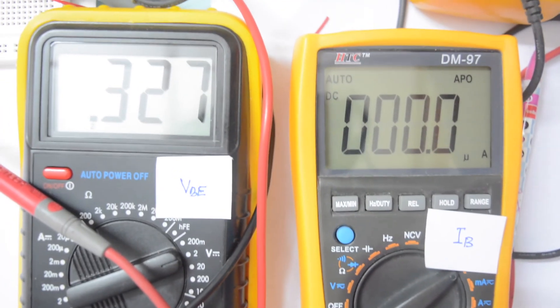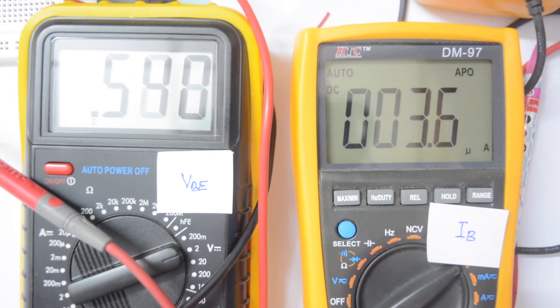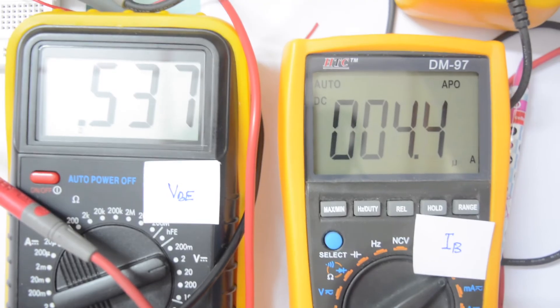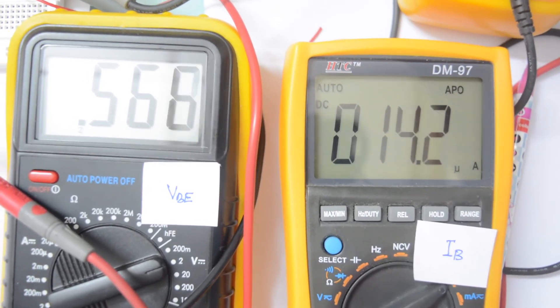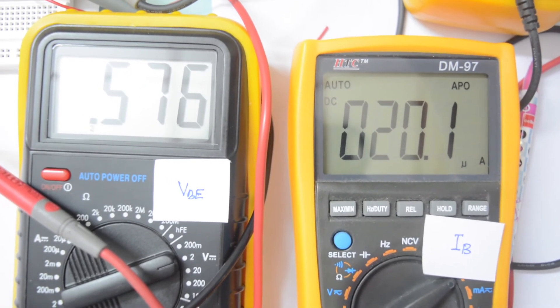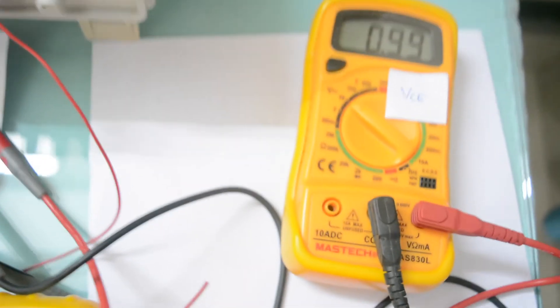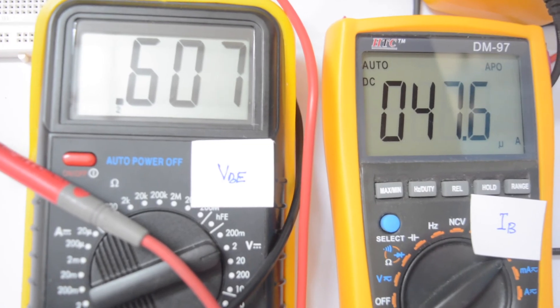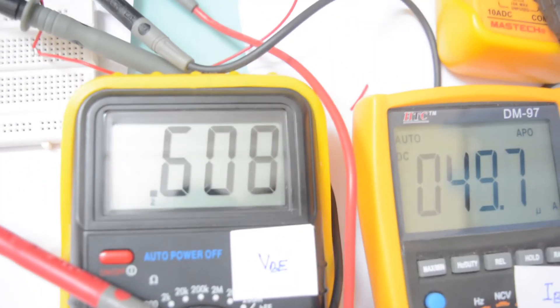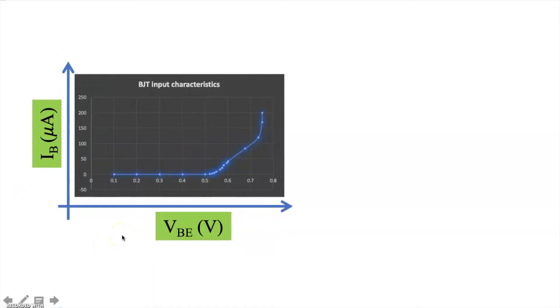Now let us start by applying voltage at the base-emitter terminal. Up to a certain voltage of VBE, the base current IB is zero. However, after some voltage it starts increasing. We can take the readings of VBE and IB and record them, ensuring that the collector-emitter potential remains constant throughout. If we plot the input current against the input voltage, we see a graph similar to the forward bias characteristics of a PN junction, because the BE junction is forward biased. This is from experimental data.